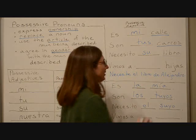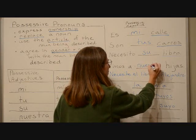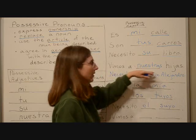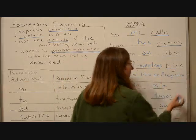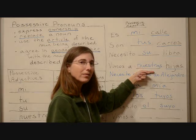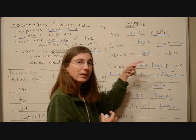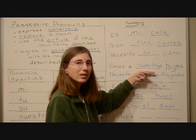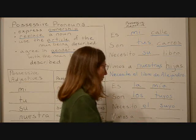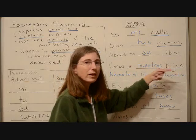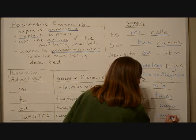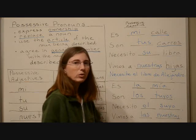Another example: 'Vimos a nuestras hijas' — we saw our daughters. The word we're describing is 'hijas.' It's plural and feminine, so we need the feminine plural form of the 'our' possessive pronoun: 'nuestras.' In Spanish it's exactly the same as the possessive adjective. We also need the article that goes with hijas: 'las.' So: vimos a las nuestras.